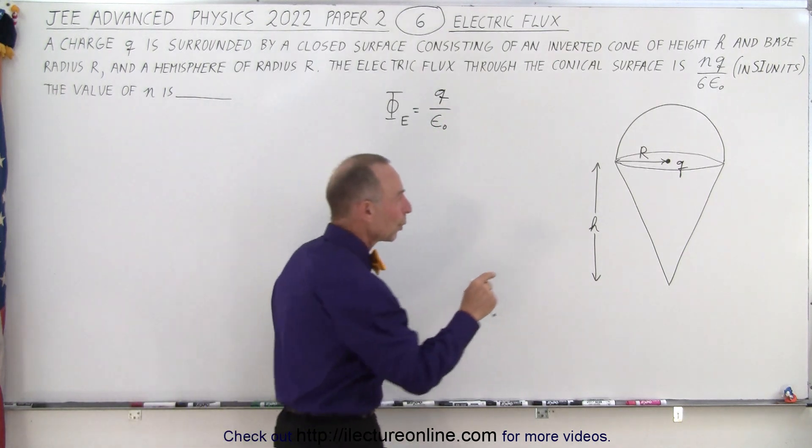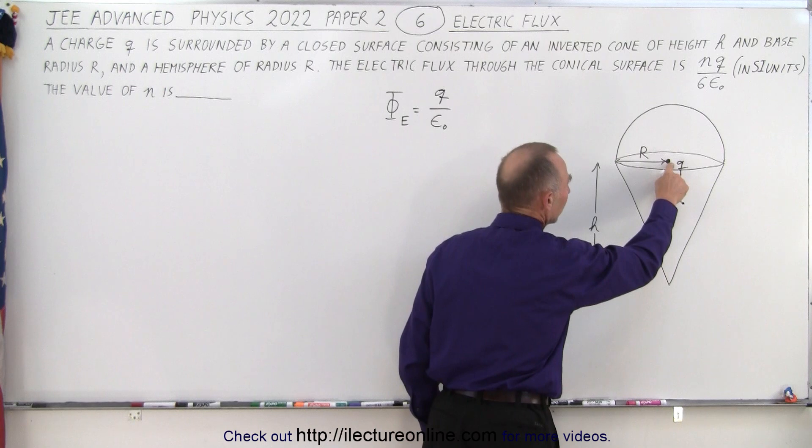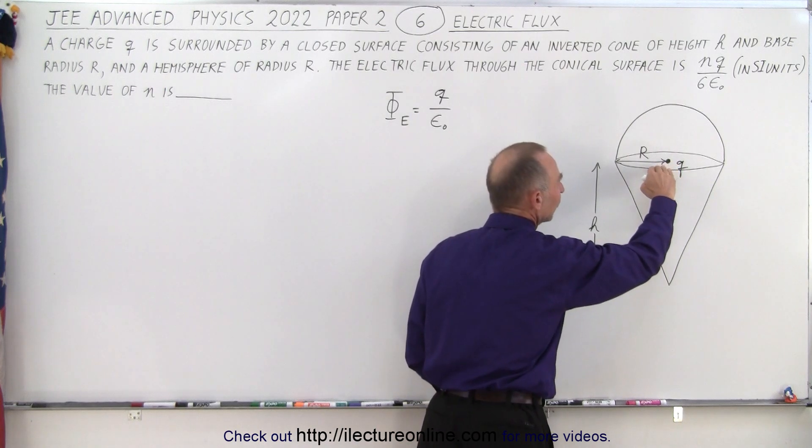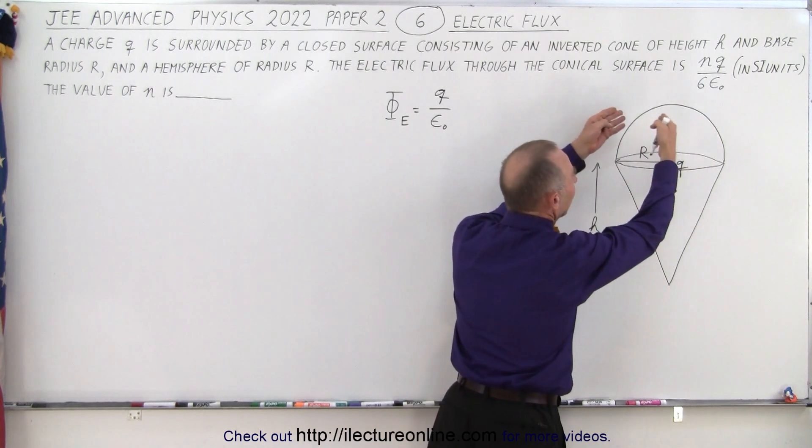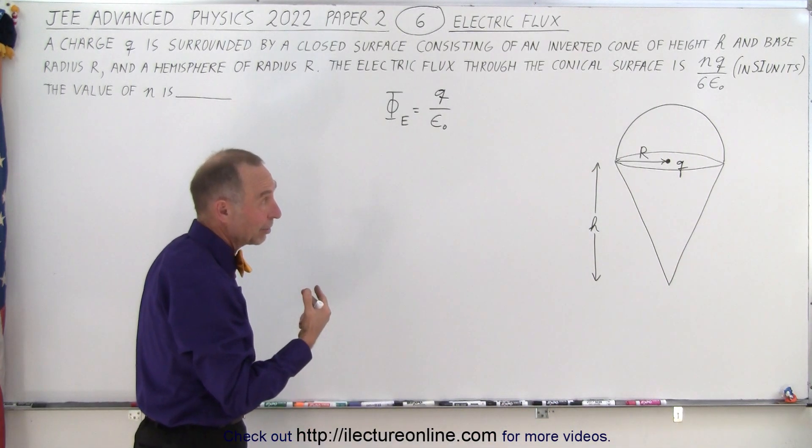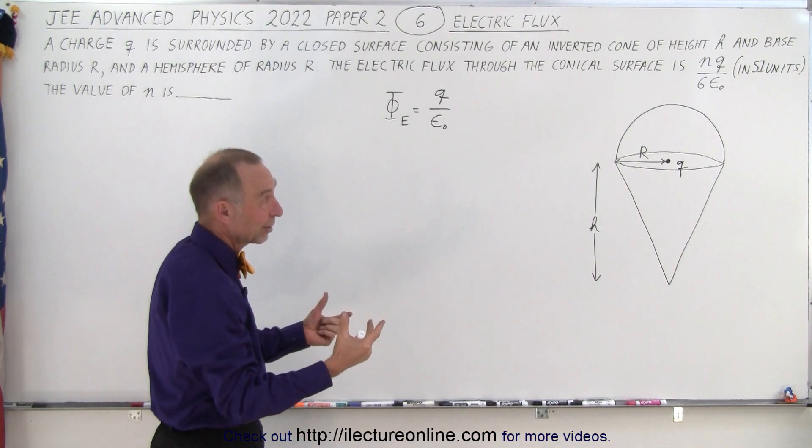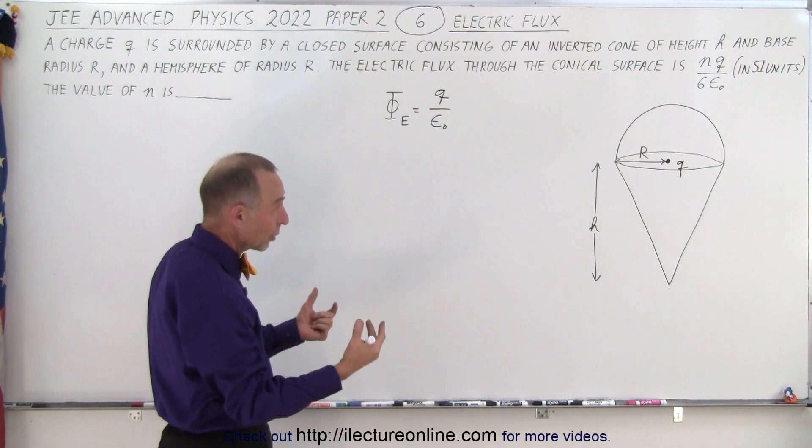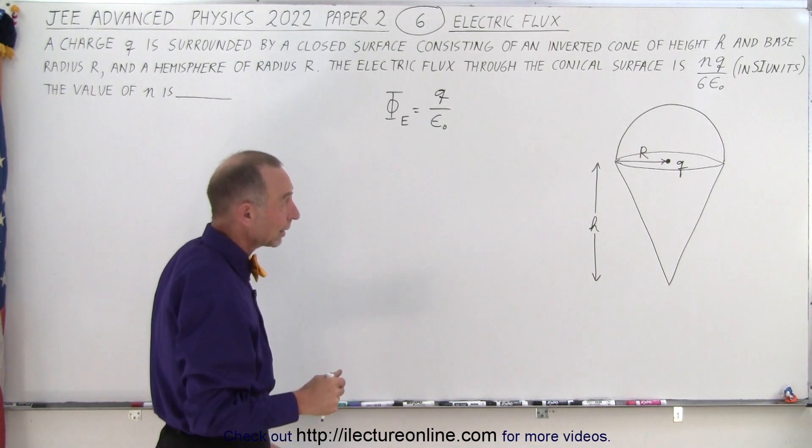Now, based upon where the charge is situated, we can see that half the flux will go through the hemisphere and the other half of the flux will go through the cone. So if we simply calculate the flux through the hemisphere, we can then set that equal to the flux going to the cone, then we can solve the problem very quickly.